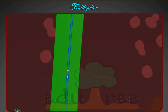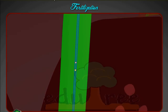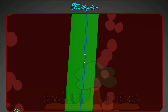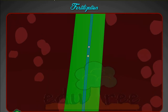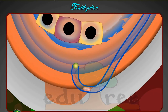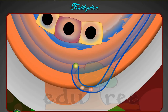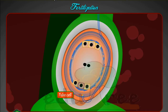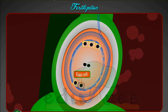The generative cell travels behind the tube cell nucleus. Once near the ovary, it divides by meiosis to produce two haploid sperm cells. The pollen tube reaches the micropyle and releases the sperm cells into the embryo sac.